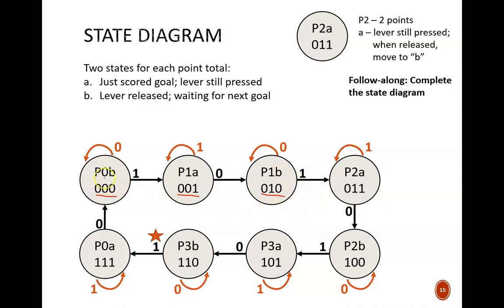Notice the points increasing from 0 through 3, and then back to 0. Why no state for 4 points, even though that is the winning score?